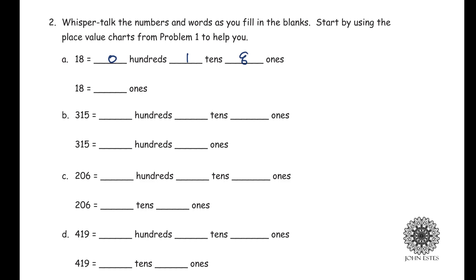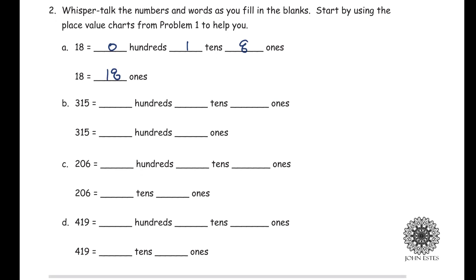Eighteen equals zero hundreds, one ten, eight ones. Another way of saying this is eighteen is eighteen ones. Looking at Part B, I have three hundred fifteen, which is three hundreds, one ten, five ones, or another way of saying that is three hundreds and fifteen ones.